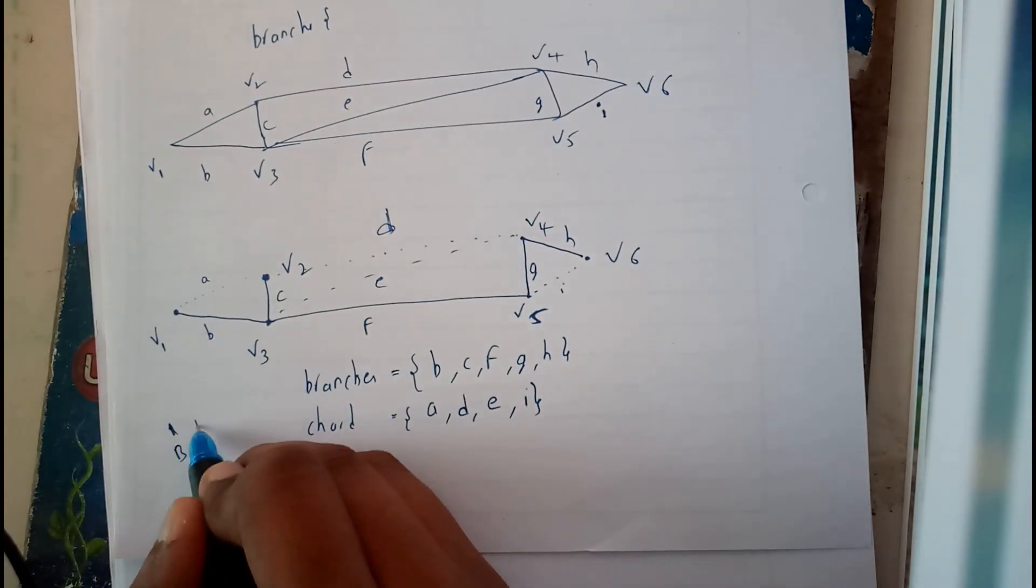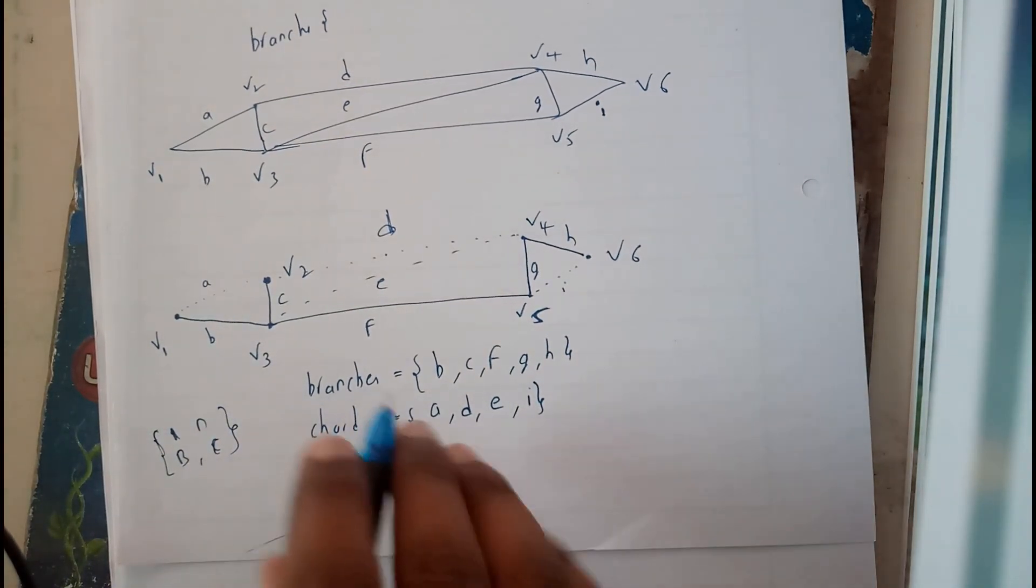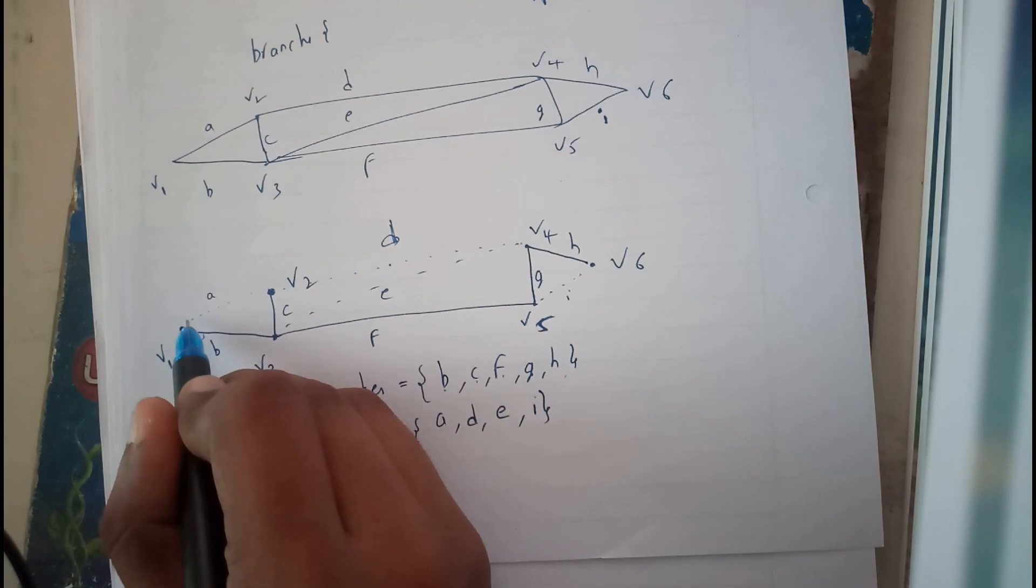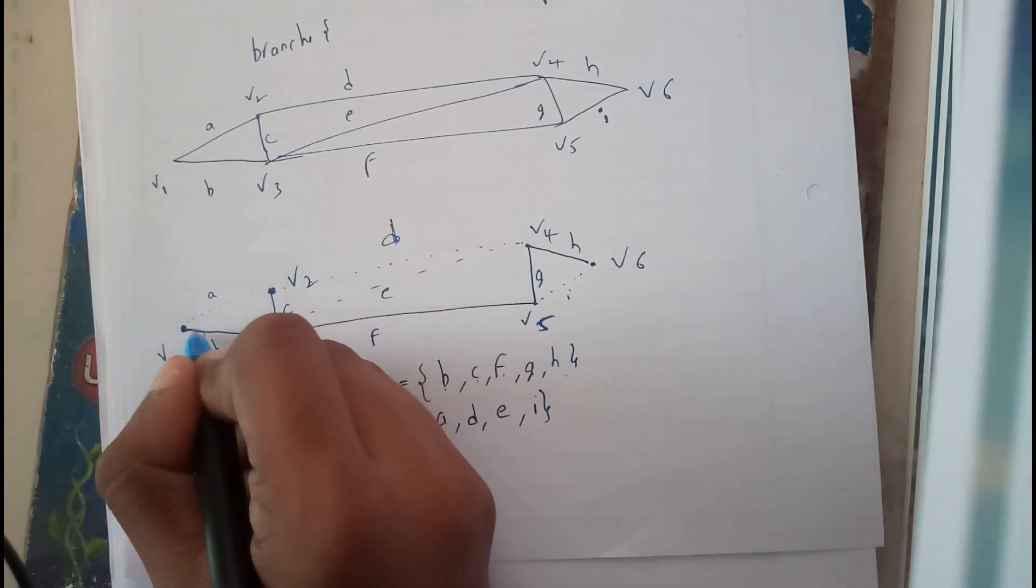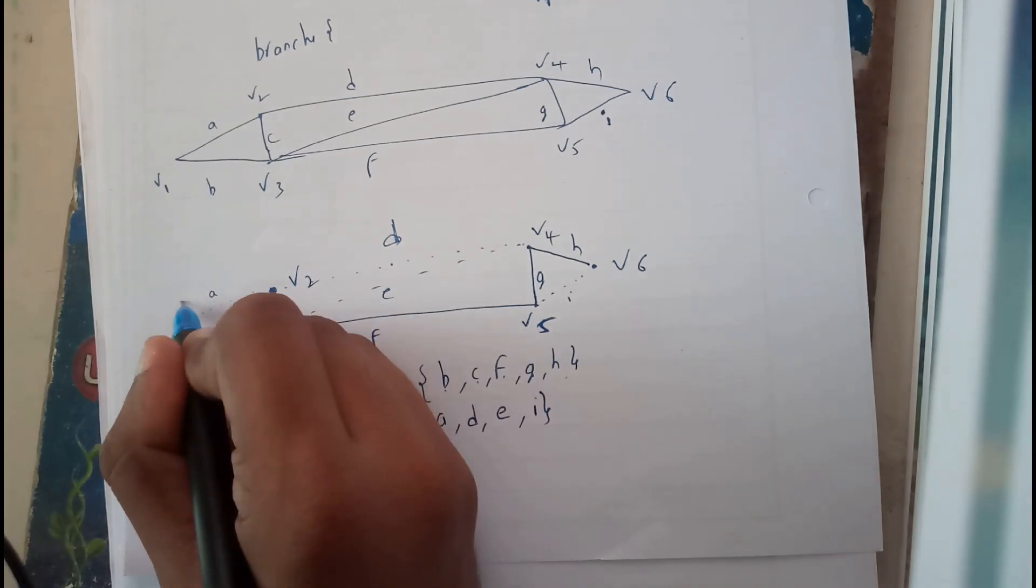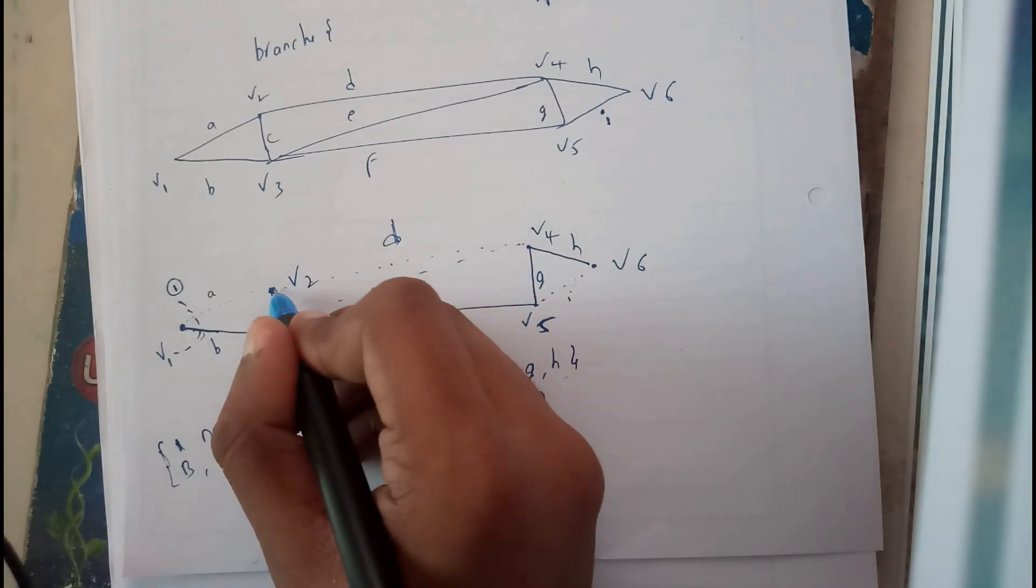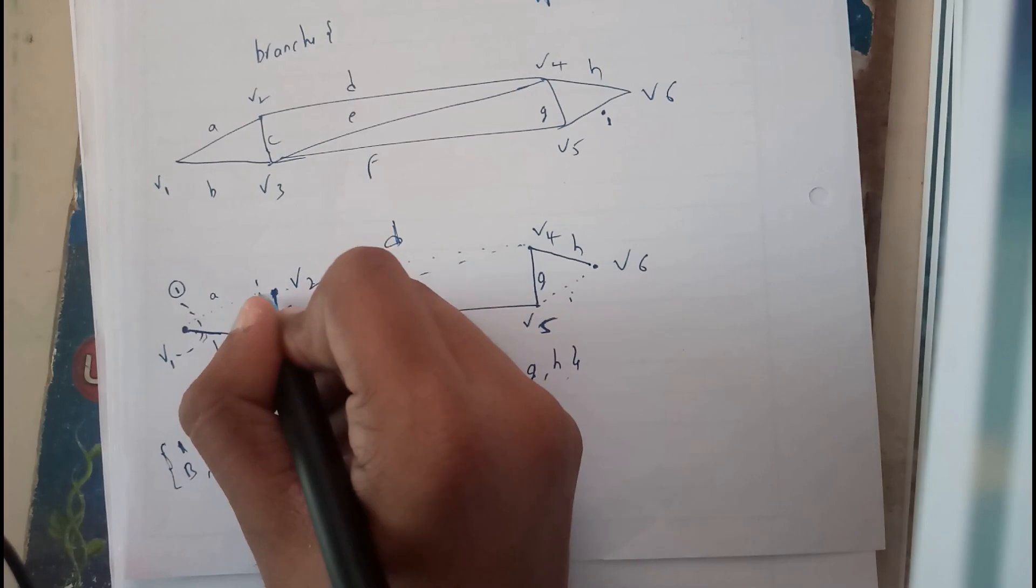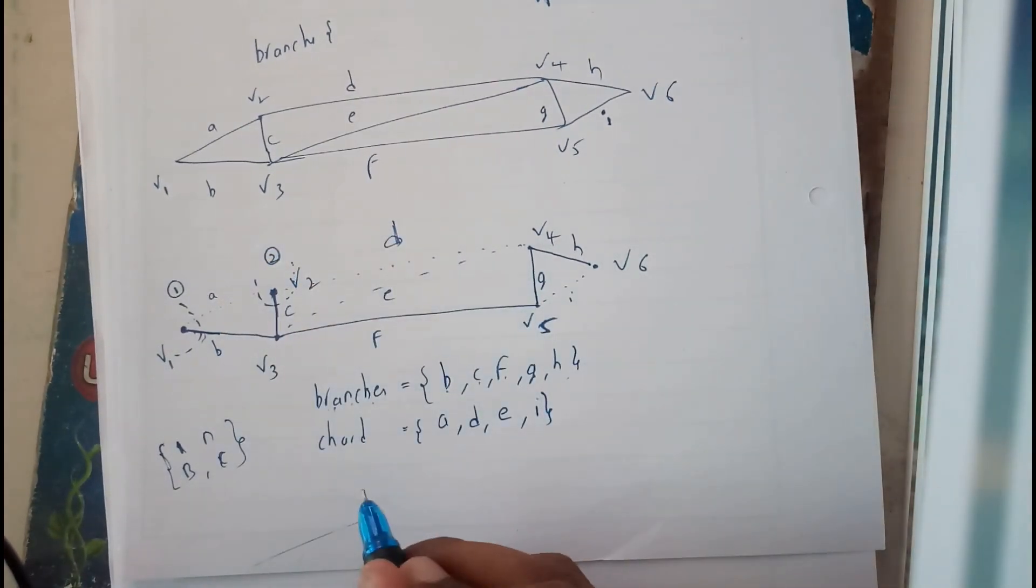A single branch and any number of chords - this is the condition. It is clear that branches are B, C, F, G, H. Here, at V1 there is only a single branch, so a cut vertex is possible. Let us assume this as 1. At V2, similar case - C is the single branch, so here also it is possible. Let us assume this as 2.